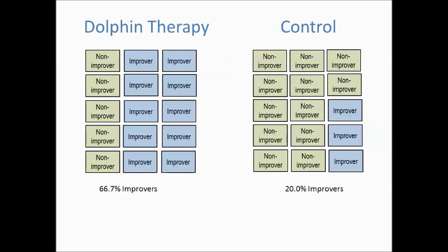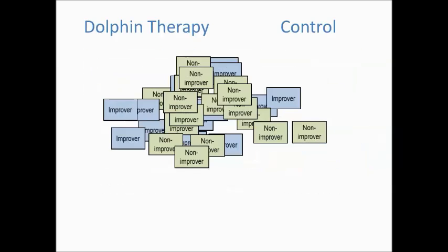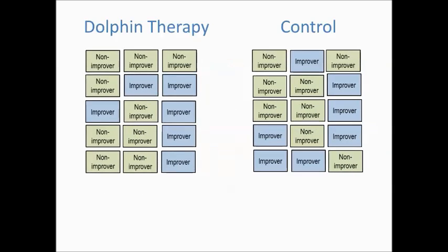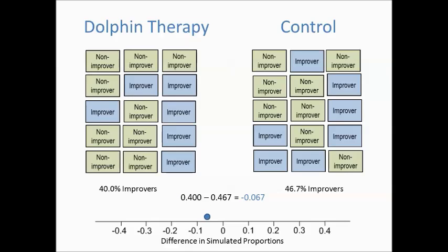Let's try this out. Here are cards representing the results from the actual study, with 10 improvers in the dolphin therapy group, and 3 improvers in the control group. We shuffle the cards and deal them into two piles of 15. In doing so, just by chance, we got 6 improvers out of 15, or 40%, in the dolphin therapy group, and 7 improvers out of 15, or 46.7% in the control group. This gives us a difference in proportions of negative .067. Let's start making a dot plot of our simulated differences, with negative .067 being our first dot.